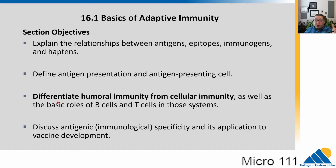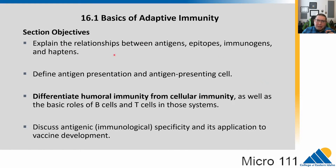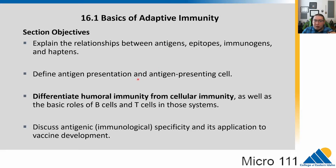We have the humoral system — antibodies and B cells — which deals with extracellular infections, and the cellular system using T cells, which deals mainly with intracellular infections. To discuss the adaptive system, we need to define terms like antigen and epitope. We'll come back to antigen-presenting cells, because they play a key role in linking the innate system with the adaptive system. And we'll talk about how the specificity and memory of this system allows us to develop vaccines.